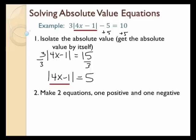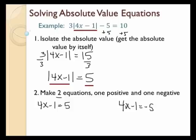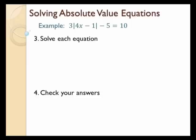To take care of that, I'm going to make two equations — one positive and one negative. So I'm going to say that 4x minus 1 equals 5, and 4x minus 1 equals negative 5. Whatever I plug in for x that makes either one of those equal to 5 or negative 5, after I take the absolute value of it, it's going to equal 5. So the next step is to solve each equation.